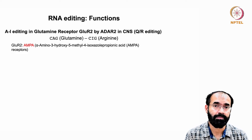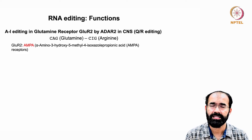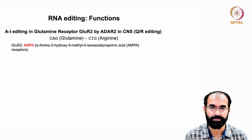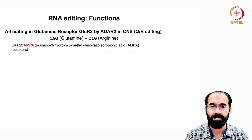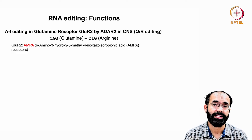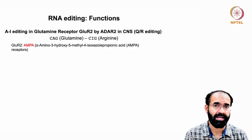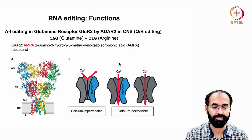AMPA and NMDA are not neurotransmitters — they are molecules that bind the receptor. The endogenous neurotransmitter that binds is glutamate, derived from the amino acid glutamic acid. Receptors that have high affinity for the chemical AMPA are called AMPA receptors, and we are specifically discussing the GluR2 subunit of the AMPA receptor.